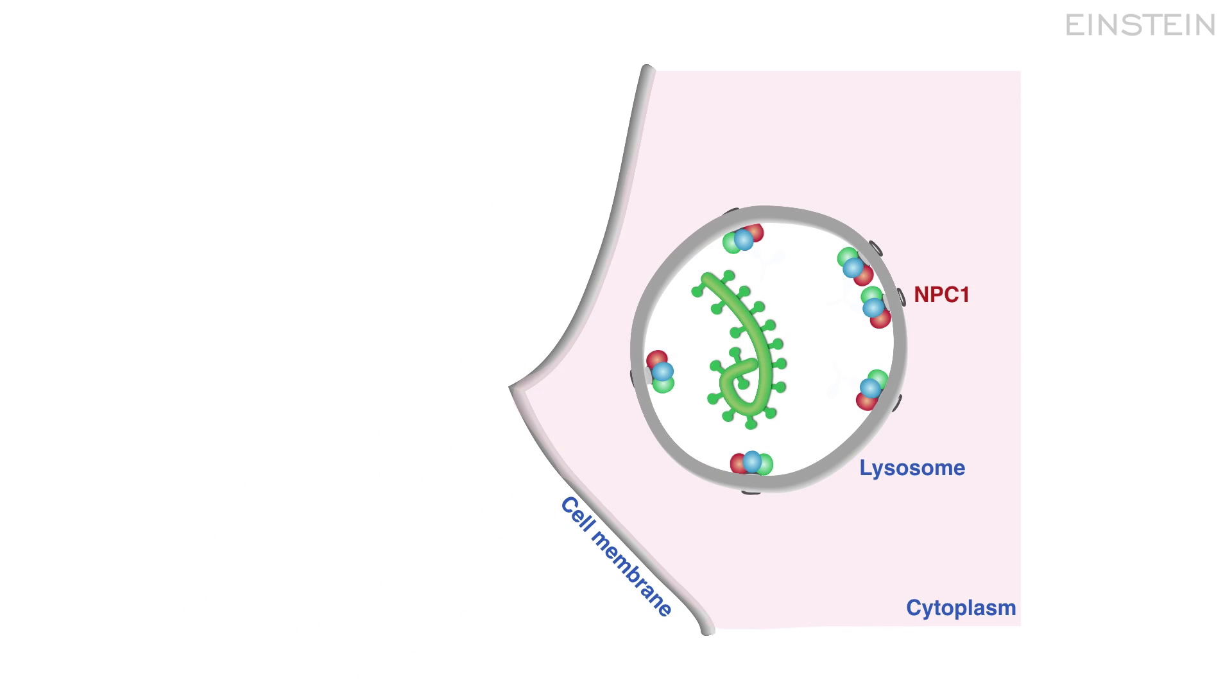Here, we took a different strategy and decided to focus on what happens in the lysosome. We know the virus has to bind to NPC1 in the lysosome, so we figured that an antibody that binds to NPC1 should be able to block the virus.